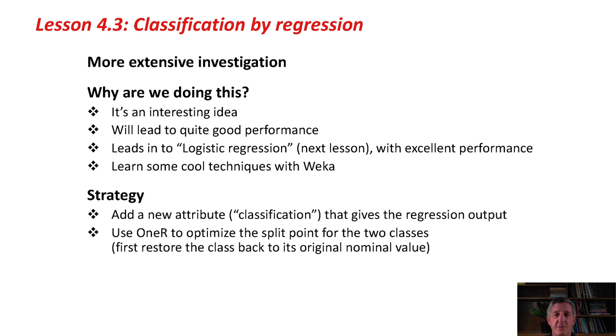My strategy is to add a new attribute, we're going to call it classification, that gives this predicted number. Then we're going to use 1R to optimize a split point for the two classes. We'll have to restore the class back to its original nominal value, because I just converted it to numeric.